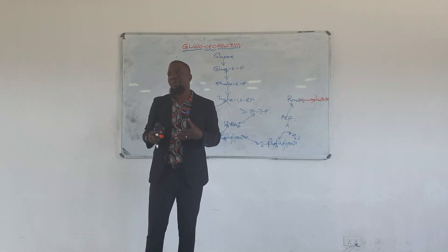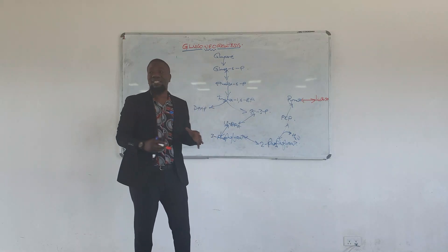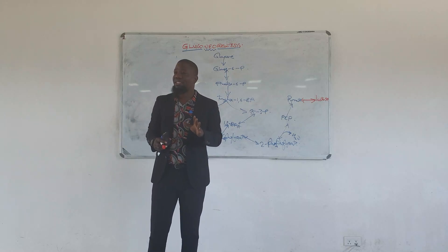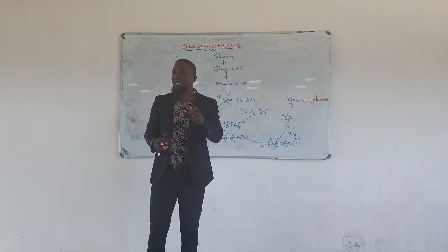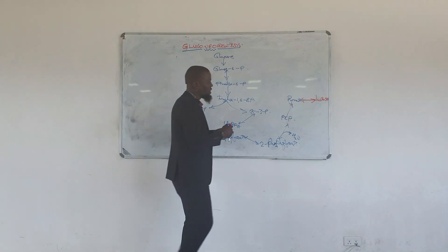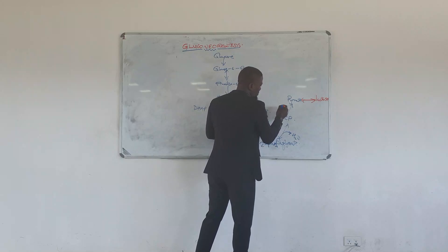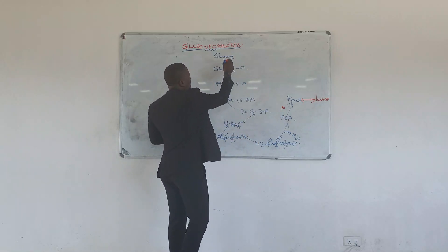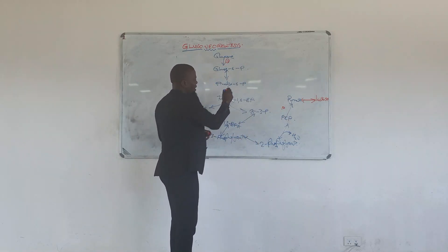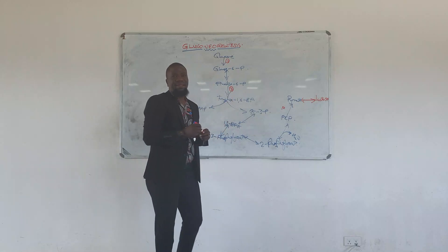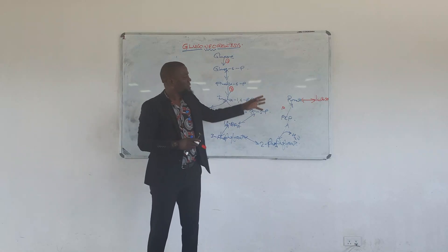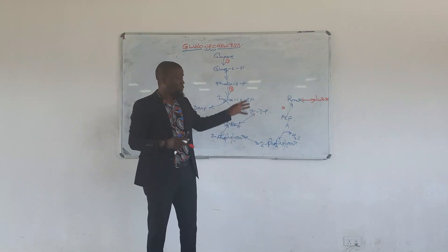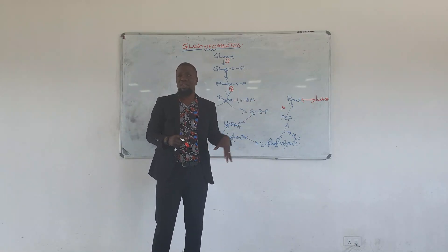There are only three irreversible reactions in glycolysis, and these are the same three reactions catalyzed by regulatory enzymes: reactions 1, 3, and 10. These same reactions are the ones that will be handled differently when it comes to gluconeogenesis from glycolysis intermediates.